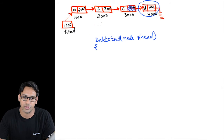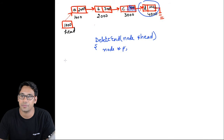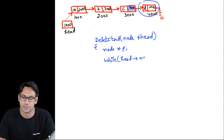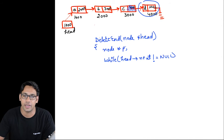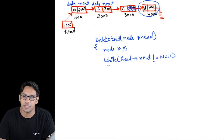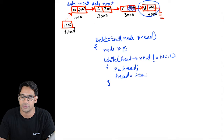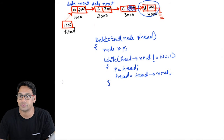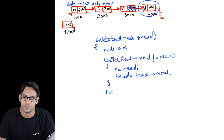We are also taking a pointer node star p — you will understand why in a moment. Then we have a while loop: while head->next is not equal to null. All these nodes have a data part and a next part, where the next part stores the address of the next node. Unless head->next is not null, we do: p = head, then head = head->next.